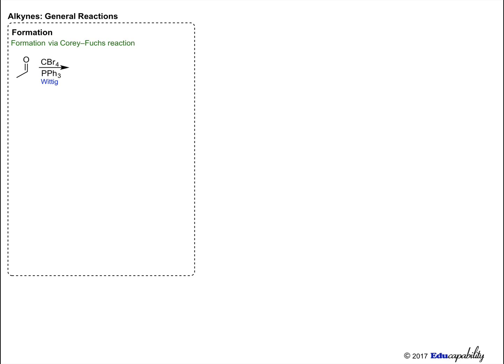The first method we'll examine is a multi-step process called the Corey-Fuchs reaction. An aldehyde is treated with a mixture of carbon tetrabromide and triphenylphosphine. CBr4 reacts with triphenylphosphine to form an organophosphorus compound, or Wittig reagent, which reacts with the aldehyde to form a dibromoalkene.